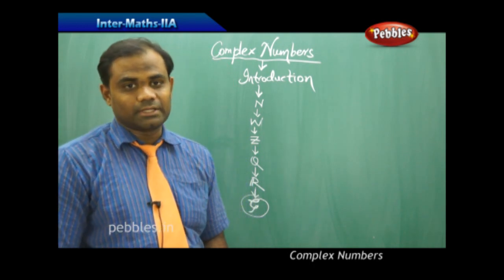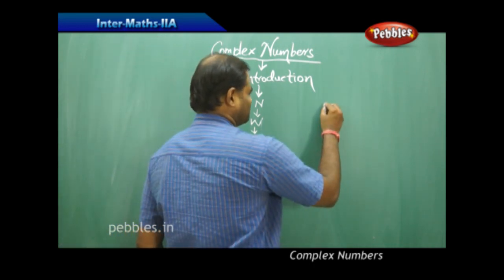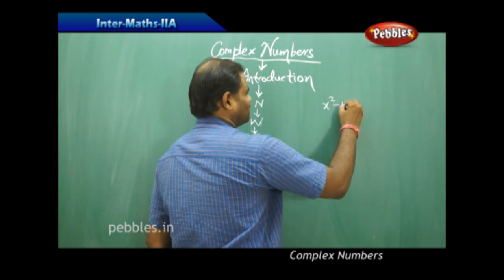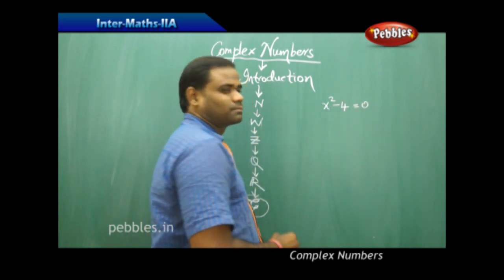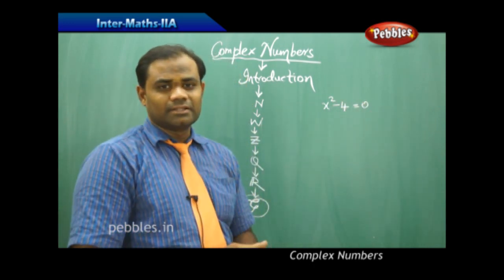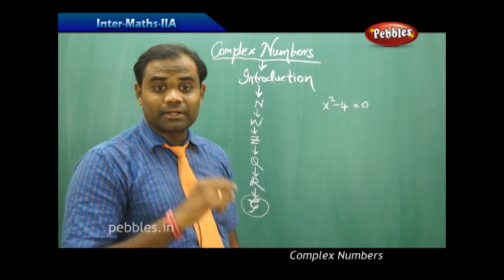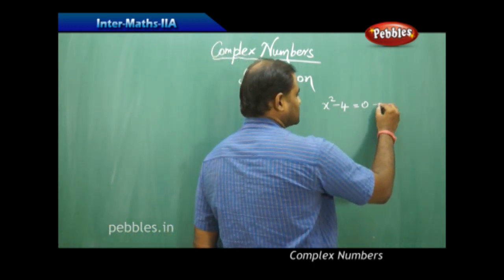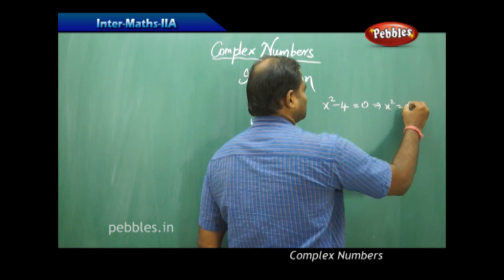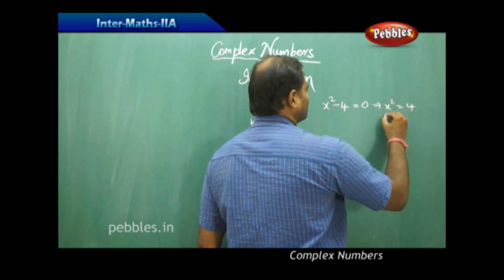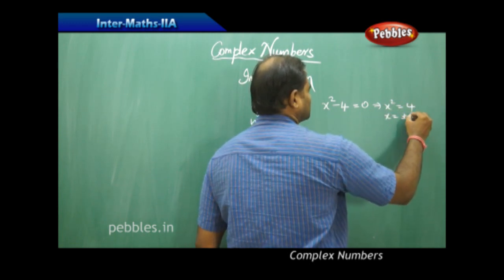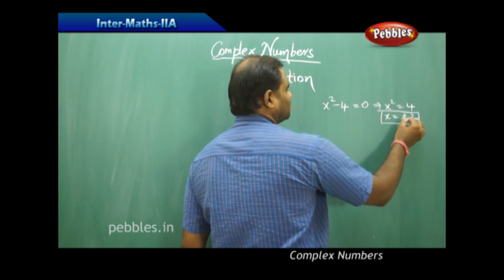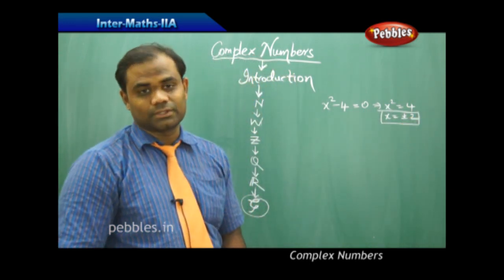Let me start with an example: x² − 4 = 0. Here it is possible to find real roots. We get x² = 4, so x = ±√4 = ±2. Therefore the real roots are 2 and −2.